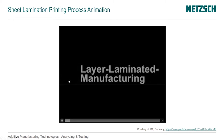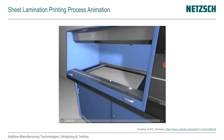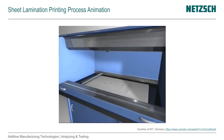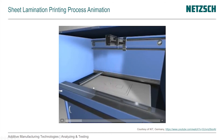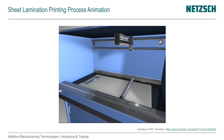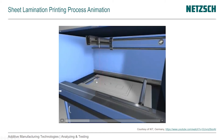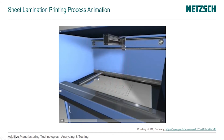They call it Layer Laminated Manufacturing — one of the terms used. You can see the machine, and here the laser is tracing the outline and the crosshatch. The laser is cutting one layer right now. In the next layer, the bonded adhesive and paper have been applied. You can see the direction of the waste take-up roll and where the fresh paper is coming from, and the laser is again tracing after the roller has moved over it.